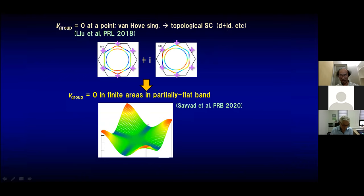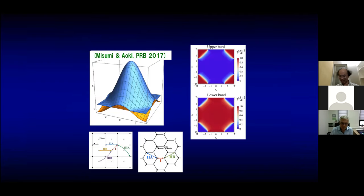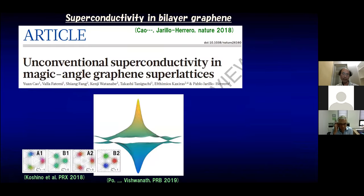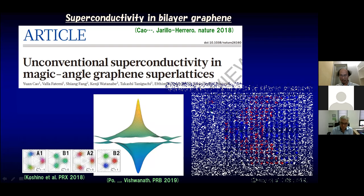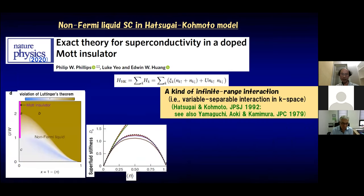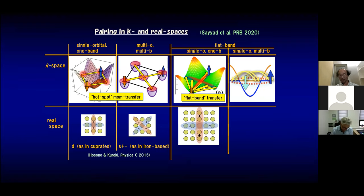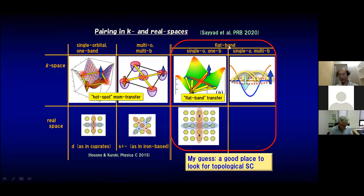As a hint, group velocity vanishes at van Hove singularities. Some papers show that this is a good place to look for topological superconductivity, such as d+id pairing. In the case of partially flat band, group velocity vanishes in finite areas, so this may behave similarly. We can also think of doping this kind of flatband system. Nowadays we have magic-angle twisted bilayer graphene which has flat portions, and some people maintain it has a non-zero Chern number. My guess is flatband superconductivity is a good place to look for topological superconductors.